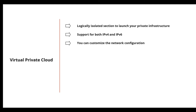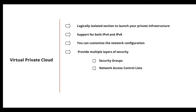It supports both private and public subnets. If you want an area accessible from the internet, you use a public subnet. Components like databases that you don't want exposed to the internet can be placed in a private subnet. It also provides multiple layers of security — you can secure your instances with security groups and network access control lists.